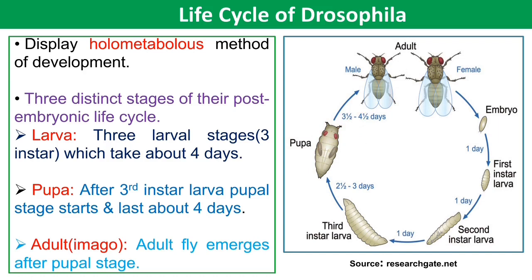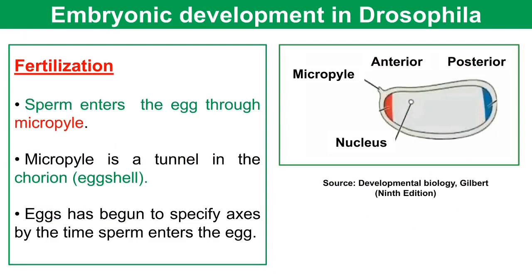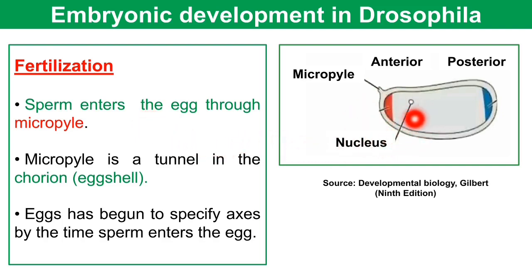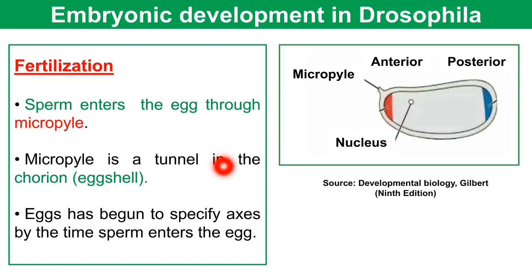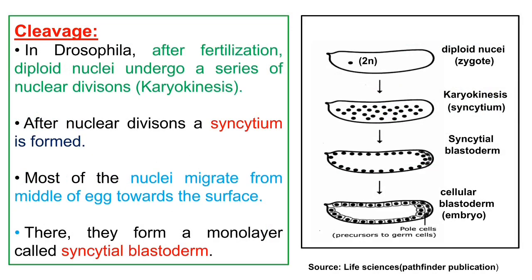Now coming to embryonic development, starting from fertilization. In the structure of the Drosophila egg, the sperm first enters the egg through the micropyle region, which is a tunnel in the eggshell. The egg has begun to specify its axes by the time the sperm enters. After fertilization, we will study the cleavage pattern of the zygote.